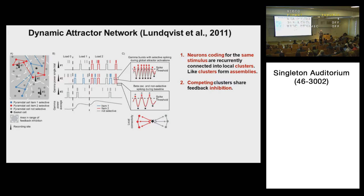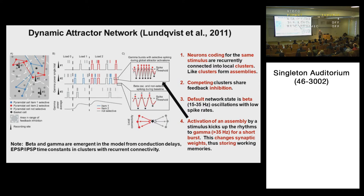The model is that neurons coding the same stimulus are connected into local clusters. Clusters form assemblies — think of assemblies as the same thing as an engram, an engram of the working memory. Competing clusters share feedback, and in essence all the engrams try to shut each other down. The default network state is beta: with no input, the network bubbles along in the beta range with low levels of spiking. But if a bottom-up input activates an assembly, it kicks the rhythms up to the gamma range for a very short burst, causing more spiking and changing synaptic weights, thus storing the working memory.